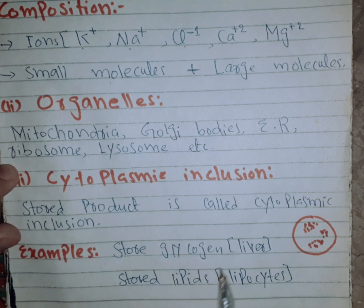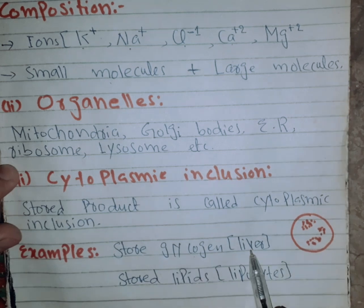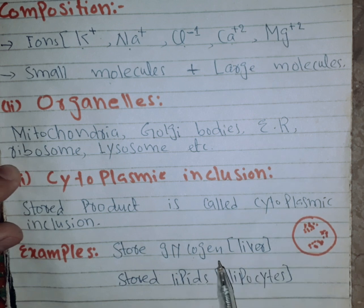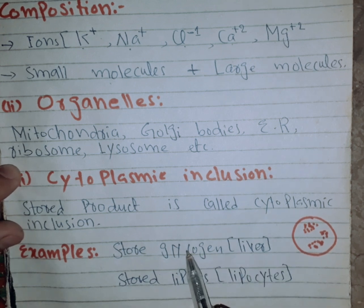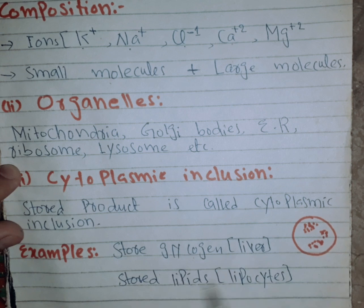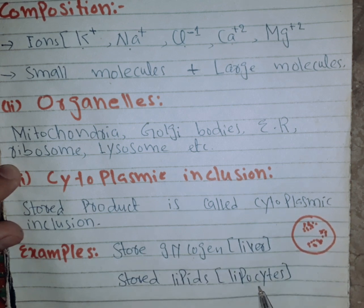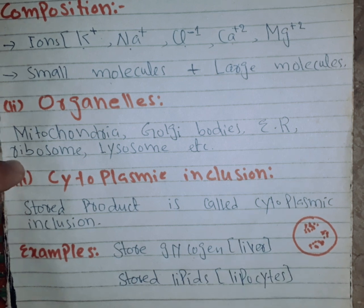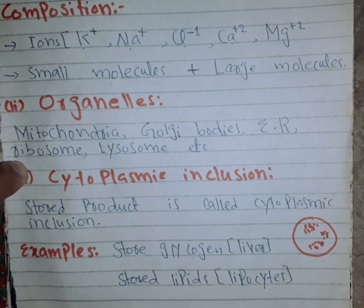For example, glycogen is stored in liver cells. This stored glycogen is called a glycogen inclusion. Similarly, when lipids are stored, they form lipid inclusions.